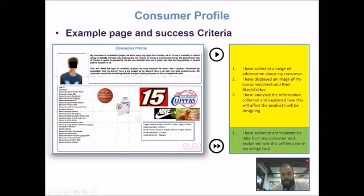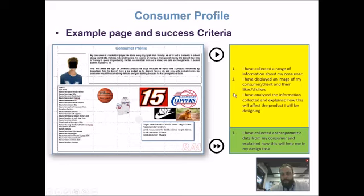We've collected a range of different information, and the important part is the analysis of that information — basically, how are you going to use it? A lot of students collect research, whether it's consumer profiles, product analysis, or questionnaires, but when it comes to writing the design brief and specification, there's no reference to this information. When creating your design brief or specification, you're making the case for your product, and you need to back it up with research. By collecting all of this — demographics, geo-demographics, household, psychographics, behaviours, and attitudes — we can build a very big picture about who the consumer is and what they need.